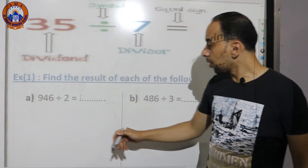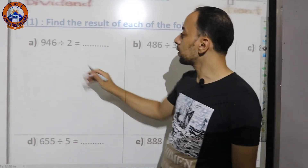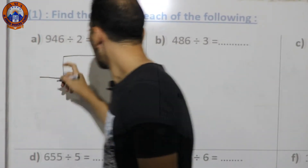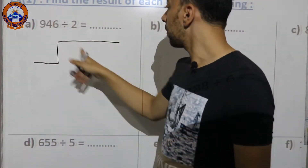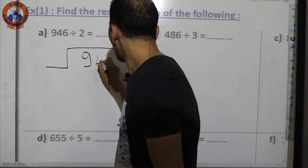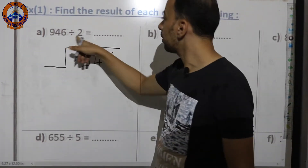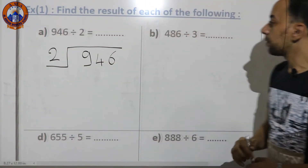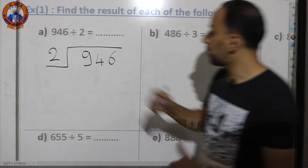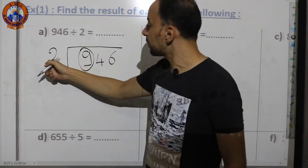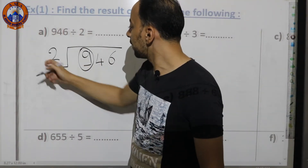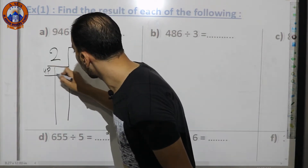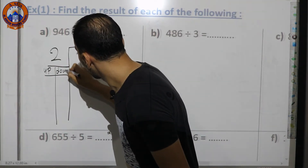Starting with question A: 946 divided by 2. I'll make the long division sign — 946 goes inside and 2 goes outside. The first step is to divide the first digit, which is 9, by 2.